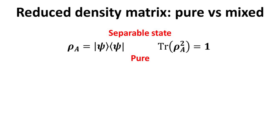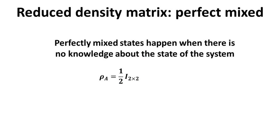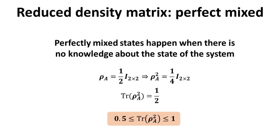On the other hand, if the state is non-separable, the reduced density matrix cannot be written as a single outer product — we call such a state a mixed state. Please refer to a separate video in the quantum mechanics playlist about the difference between pure and mixed states. A mixed state contains a statistical distribution of pure states, and the trace of its reduced density matrix squared is less than one. When the reduced density matrix is in a perfectly mixed state, its density matrix is proportional to the identity matrix, meaning equal likelihood for any basis state — equivalent to knowing nothing about the quantum state. Following this through, the trace of rho squared equals one-half, which constitutes the lower bound value.